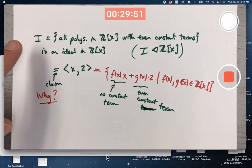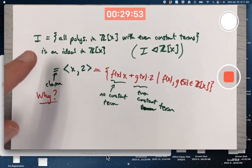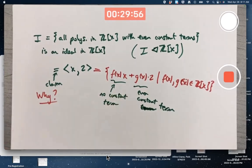That's one inclusion. What's the other inclusion? Can I show this as a subset of that? Can I show any polynomial with an even constant term can be written in this form? Yeah, that's true.